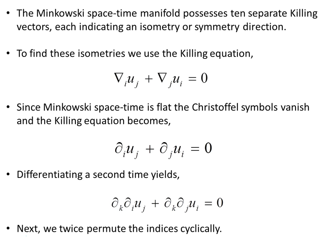The Minkowski spacetime manifold possesses 10 separate killing vectors, each indicating an isometry or symmetry direction. To find these isometries we use the killing equation. Since Minkowski spacetime is flat, the Christoffel symbols vanish and the killing equation simply becomes this object here involving partial derivatives only.